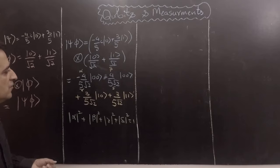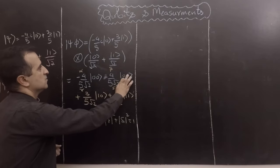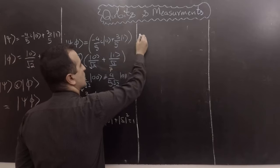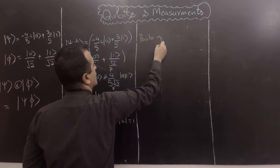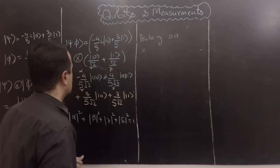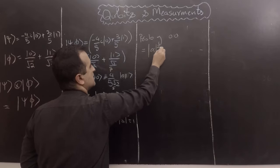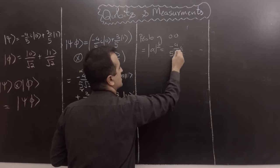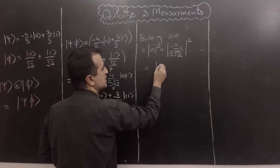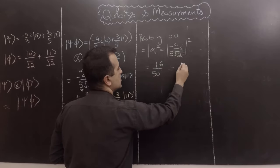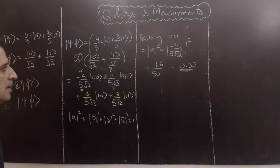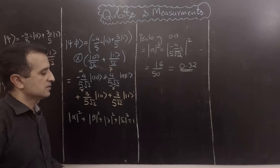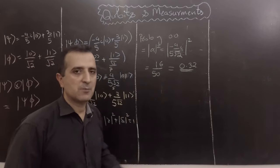We can also find probabilities of individual outcomes. The probability of outcome |00⟩ equals |alpha|², which is |−4/5 i|² times (1/√2)², giving 16/50, which equals 0.32. Similarly, we can find the probability of outcome |01⟩, outcome |10⟩, and outcome |11⟩. So we can combine qubits and have multiple qubits in a single register.